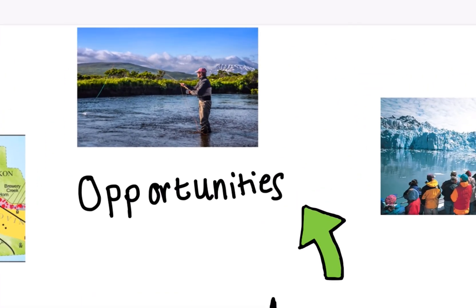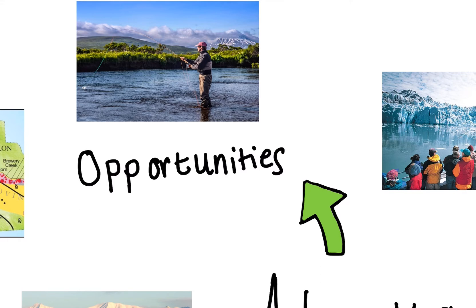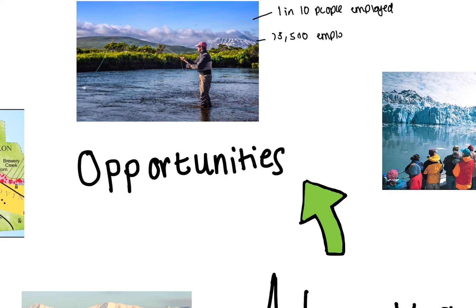The first opportunity is fishing. Alaska has a really abundant natural environment — about 3 million lakes and 3,000 rivers, so there are plenty of opportunities for the fishing industry. Fishing is so popular that one in 10 people are employed within it. Some of the biggest fisheries for salmon and crab are found there, with 78,500 people employed within fishing itself.